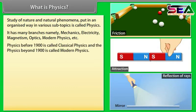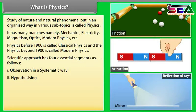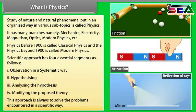Physics before 1900 is called classical physics and physics beyond 1900 is called modern physics. Scientific approach has four essential segments: number 1, observation in a systematic way; number 2, hypothesizing; number 3, analyzing the hypothesis; number 4, modifying the proposed theory. This approach is always to solve problems encountered in a scientific way.